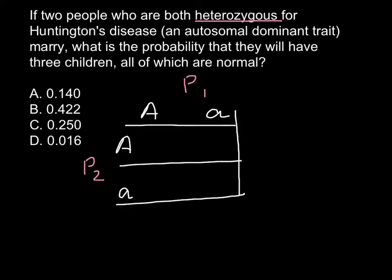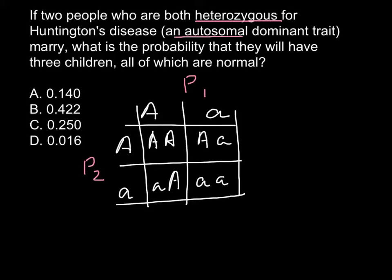And now we build our Punnett square. And we can put capital A, capital A here. Capital A, small a here. Small a, capital A here. And small a, small a here. We are also told that this is autosomal dominant trait. And that means that all these three cases out of four, we will have affected person. And only here we will have an unaffected child.